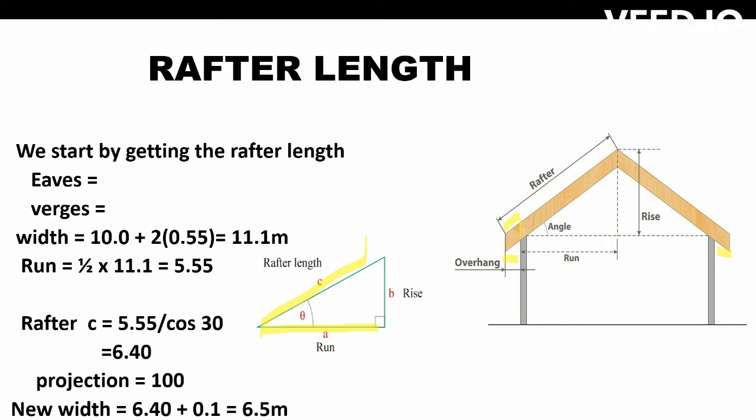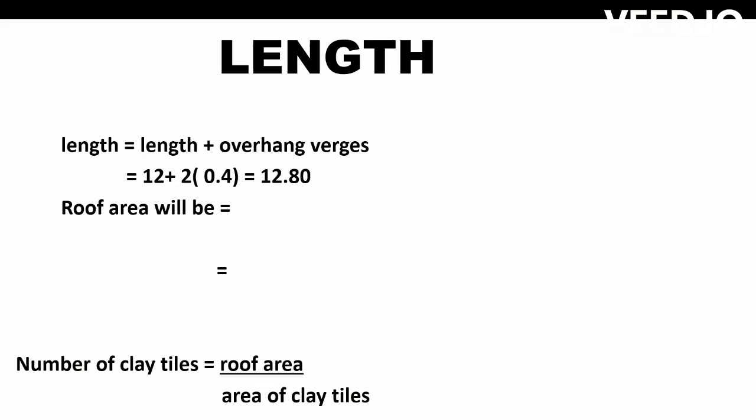For the length, the building length was 12 meters plus the verge overhangs of 0.4 m on both sides giving us 12.80 meters. Our roof area will be the length multiplied by the rafter width: 12.40 by 6.50, giving us 80.60 square meters.